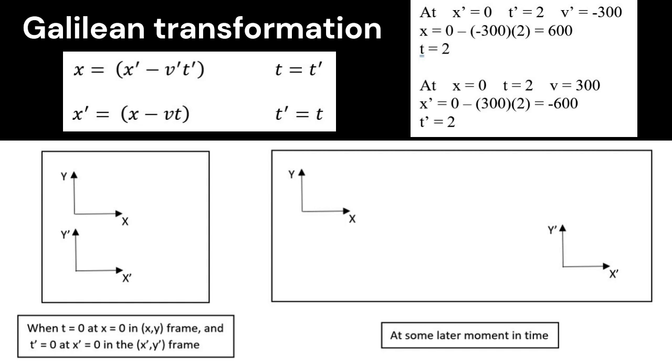Obviously, the times in the Galilean transformation, there's no time dilation, so the times are equal. There are assumed to be clocks running the same speed everywhere. Pre-relativistic.